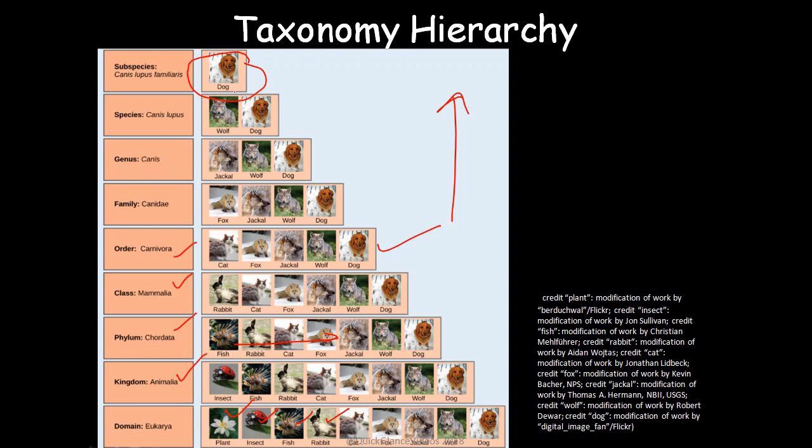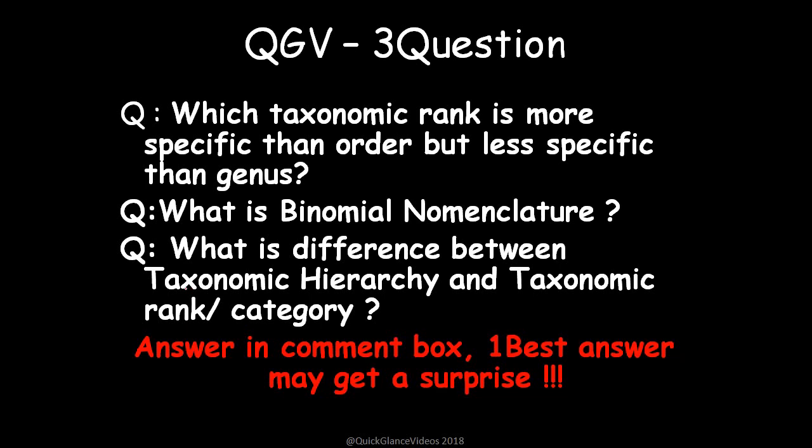This pyramid visualization will help you understand and remember during examinations — just remember how each rank is placed in the hierarchy. Here are three questions for the comment section: Which taxonomical rank is more specific than order but less specific than genus? What is binomial nomenclature? What is the difference between taxonomical hierarchy and taxonomical rank? I'll be replying to all queries in this session.